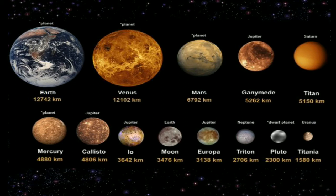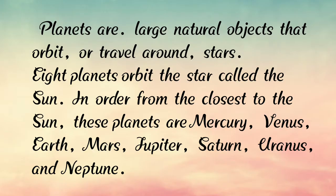Planets are also important in our galaxy. The planets are large natural objects that orbit or travel around a star. Eight planets orbit the star called the sun, in order from closest to the sun: Mercury, Venus, Earth, Mars, Jupiter, Saturn, Uranus, and Neptune.